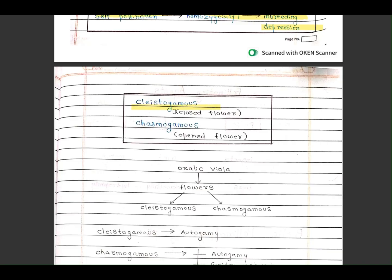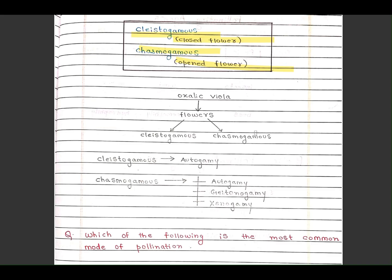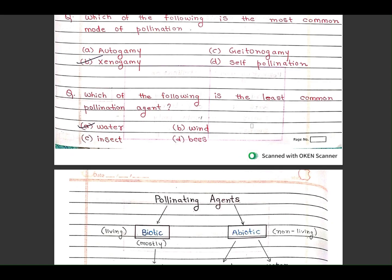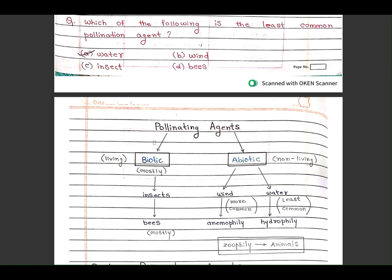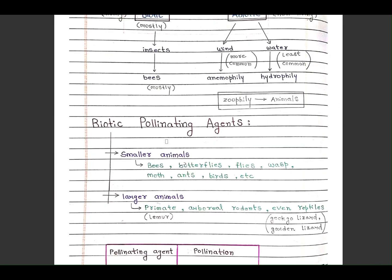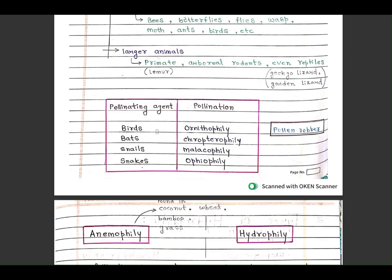Cleistogamy occurs in closed flower. Chasmogamy in open flower. Few MCQs are also given, read it by yourself.